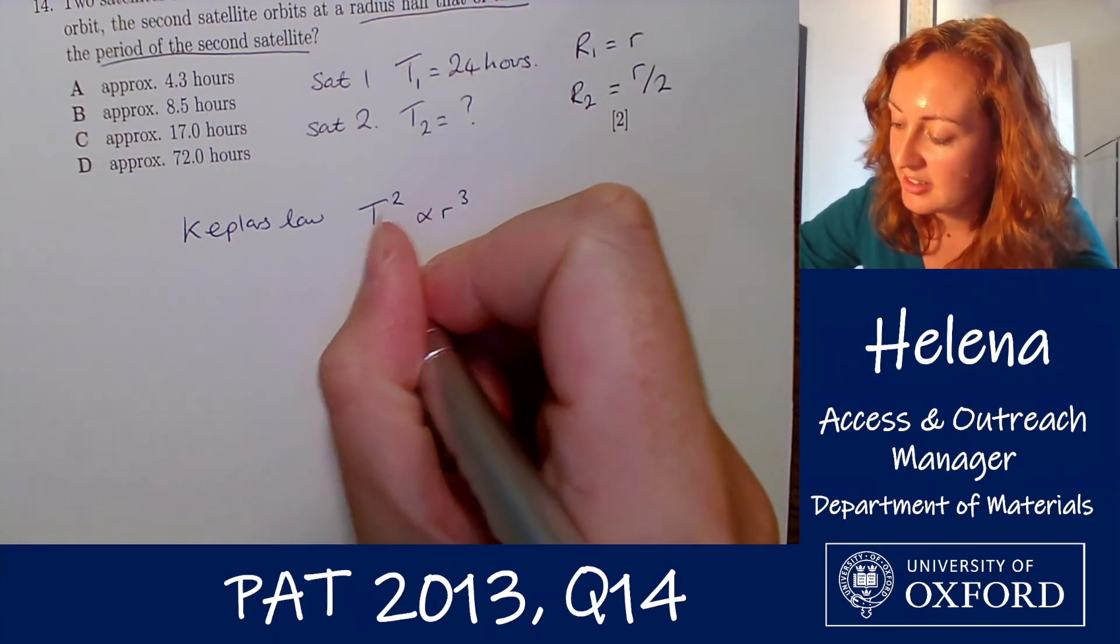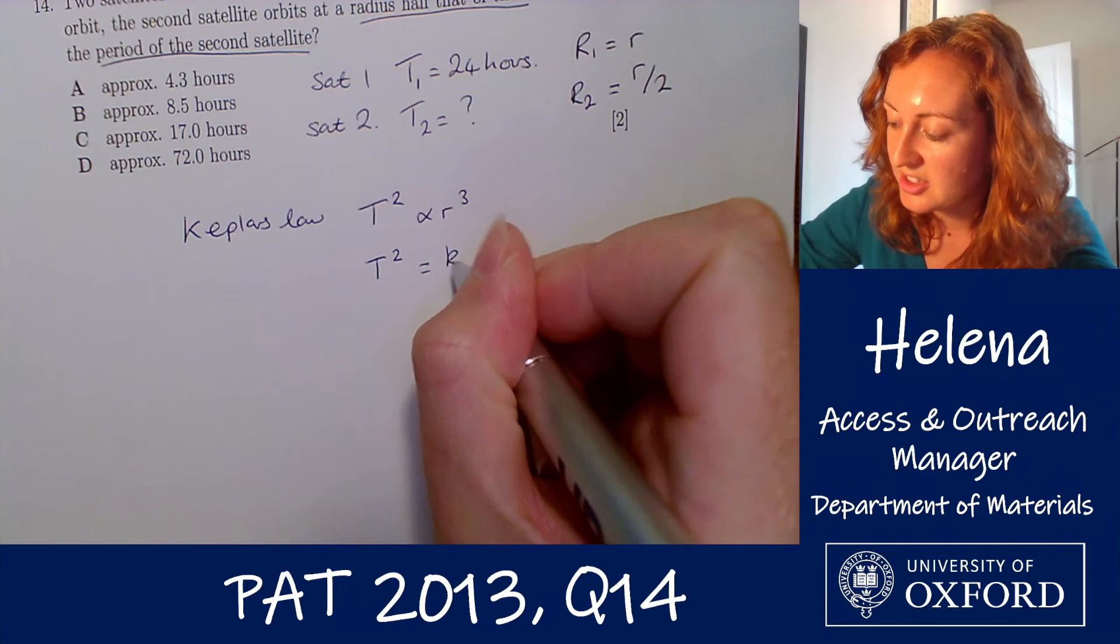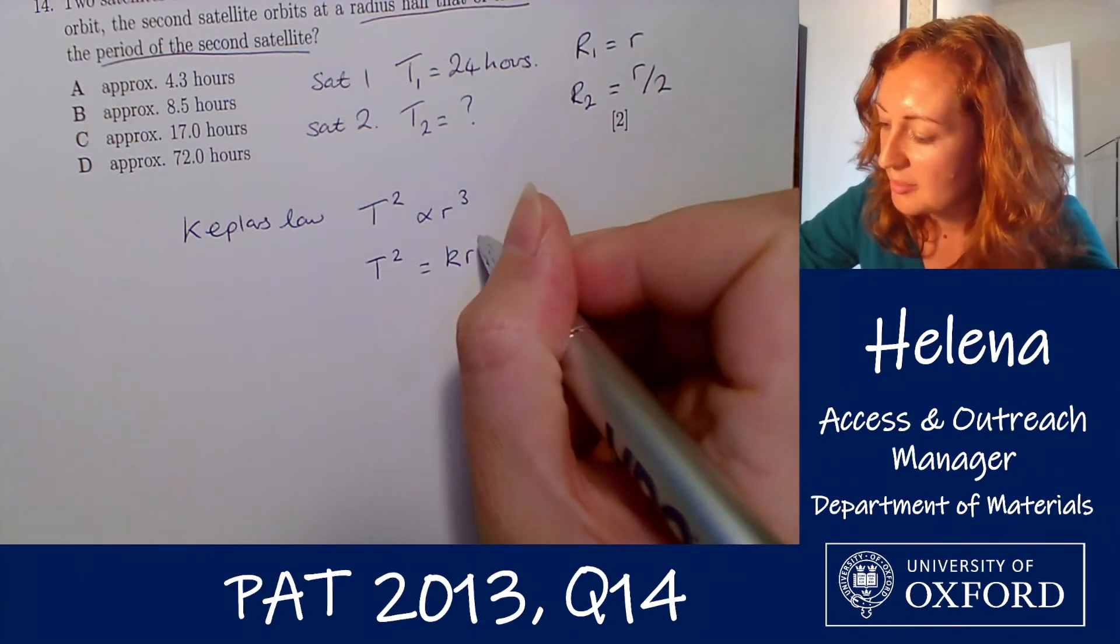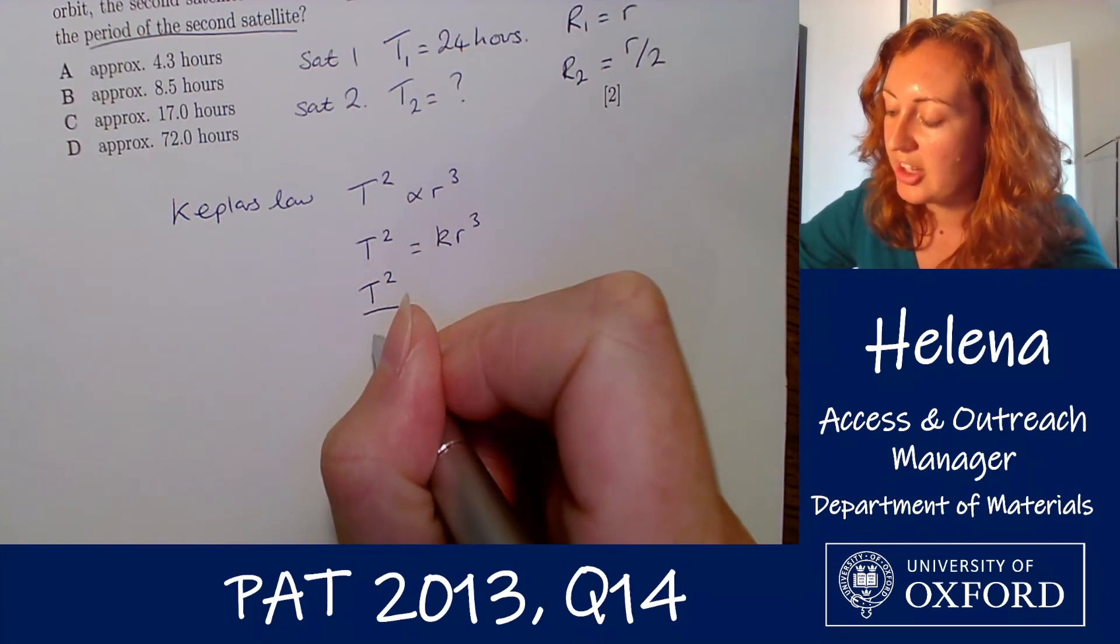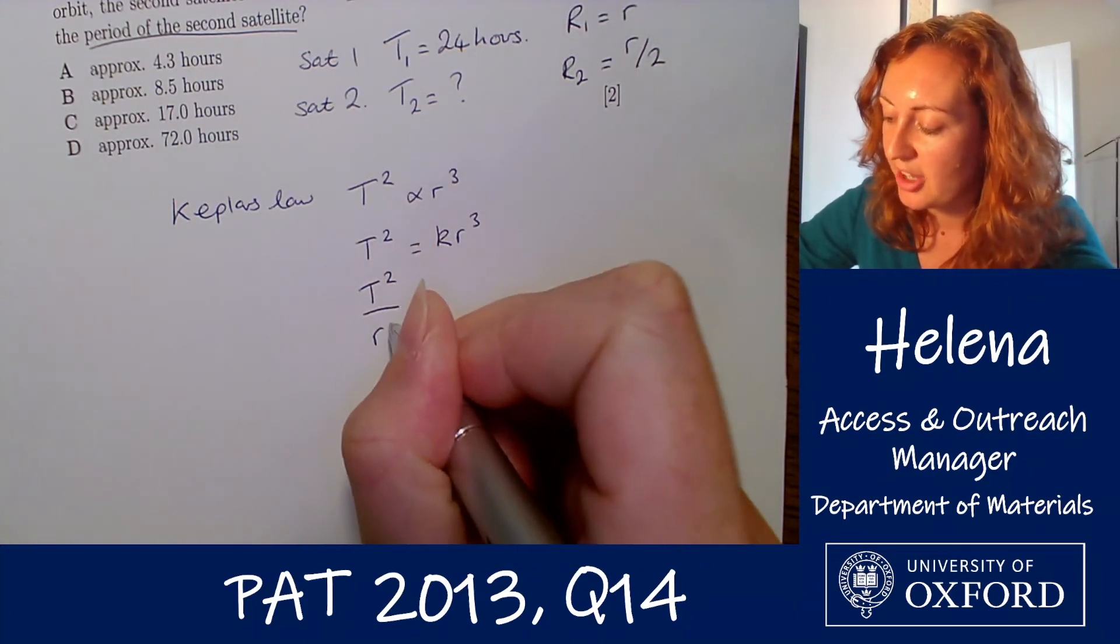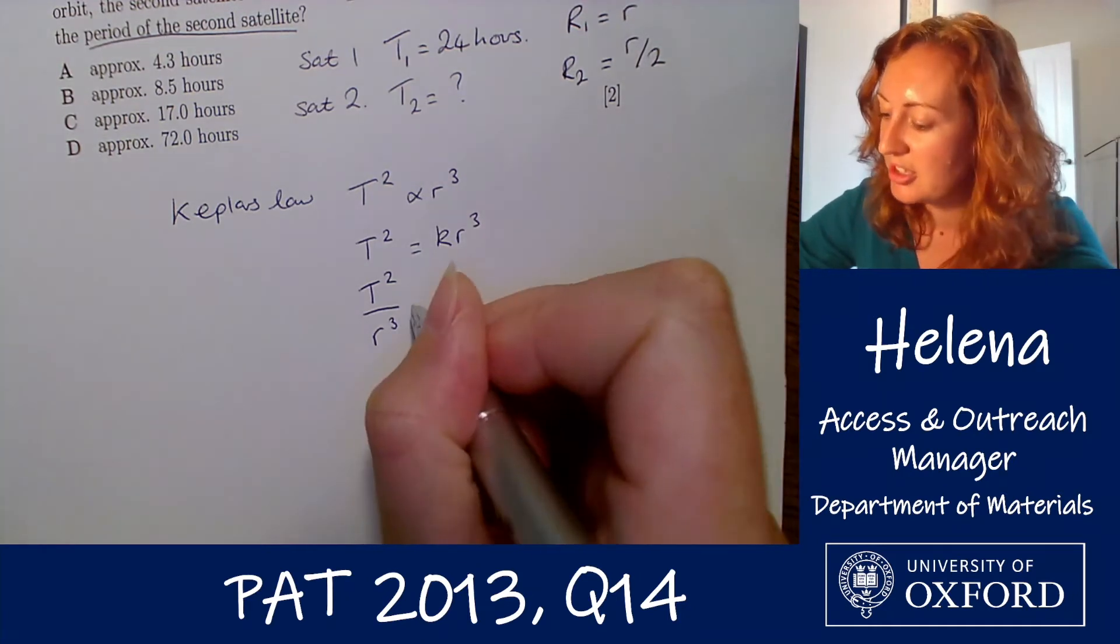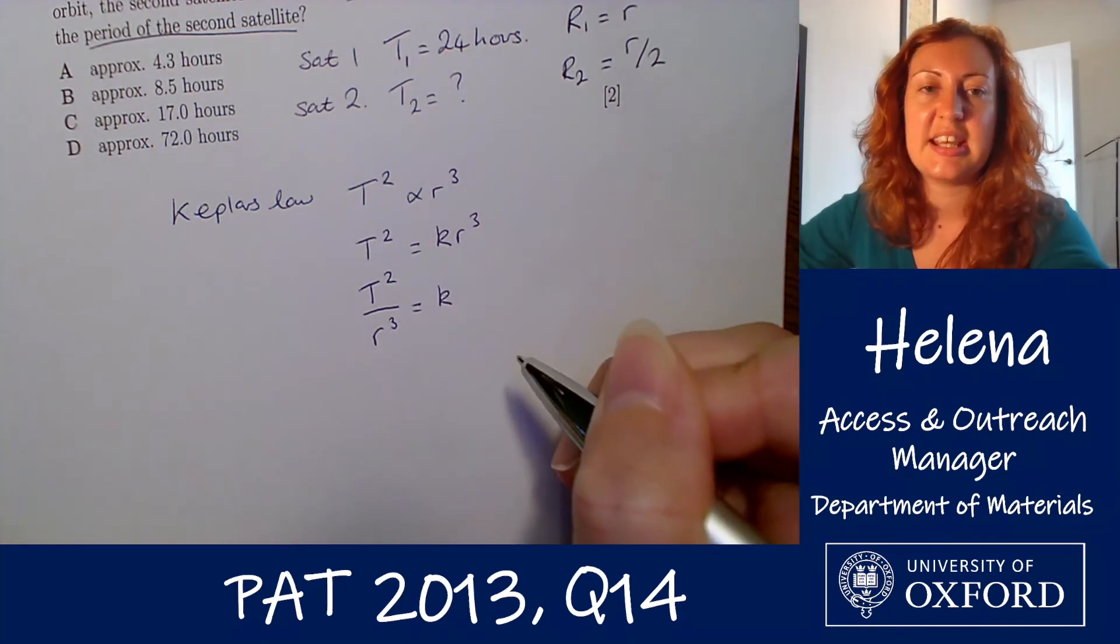In other words that t squared is equal to a constant let's call that k times r cubed which we can rearrange to give us a ratio of the orbital period squared divided by the orbital radius cubed which gives us this constant here k.